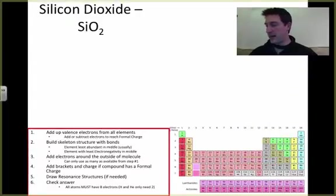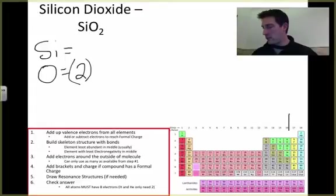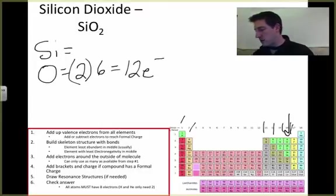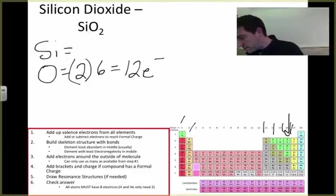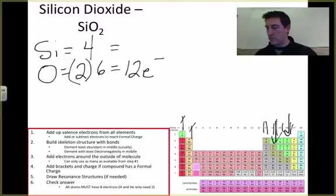Another one, looking at silicon dioxide, we add these up. We've got one silicon, we've got oxygen, and we have two of those. Oxygen is right over here in the one, two, three, four, five, six, group six, so we're going to get twelve electrons to build from oxygen. Silicon is right here, which means it's one, two, three, four. We get four electrons from there. I'm just going to move it over so we can see this. We get sixteen electrons.